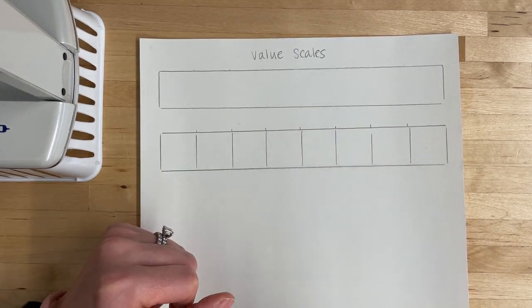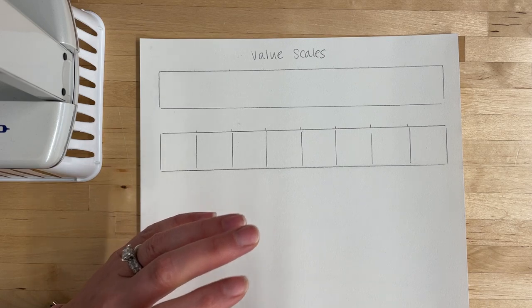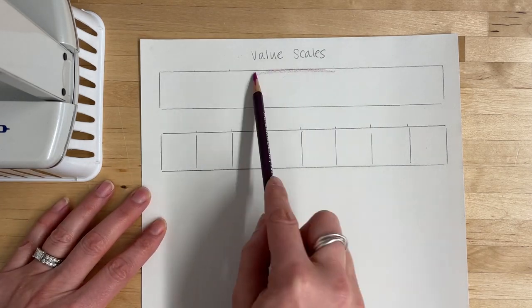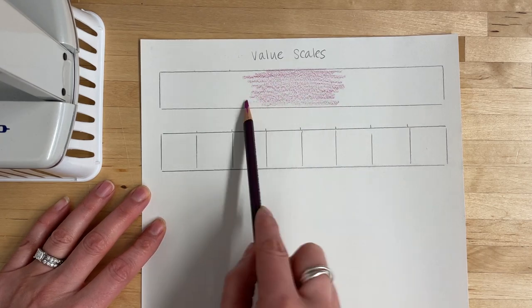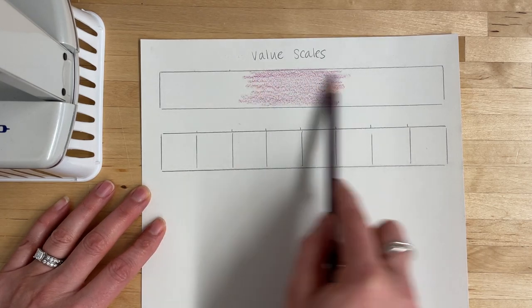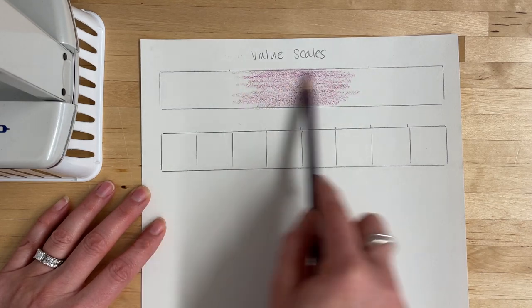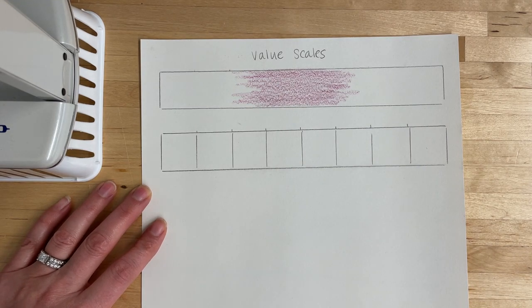Just like we did earlier in the semester, we're going to start in the center of our value scale, laying down a medium to light medium value. Remember that we can always go back and darken it up, but it is a little bit more challenging with colored pencil to erase or lighten things up. Not impossible, but definitely more challenging.